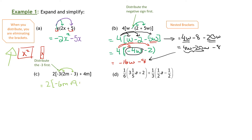Inside I've got now negative 6M plus 9. We got rid of those round brackets. And the 4M — we haven't done anything with that yet. My next step is to clean up the like terms inside the brackets: I have negative 6M and positive 4M, so negative 6M plus 4M is negative 2M, and then plus 9. Now I'm going to distribute the 2: 2 times 2M is negative 4M and 2 times 9 is positive 18. So there's my answer for Part C.